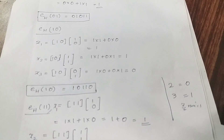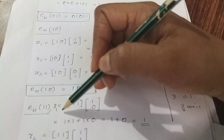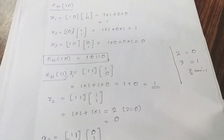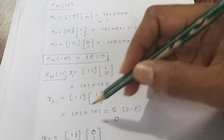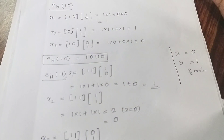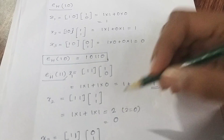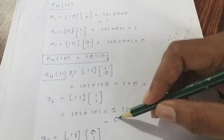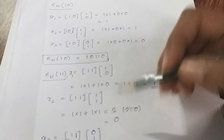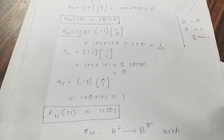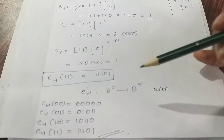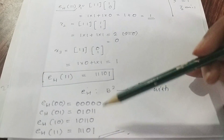The second element is e(1,1). For x2, we compute: plus 1 into 1 gives 2, then we take the binary representation — 2 divided gives remainder 0, so 2 is represented as 0 in mod 2. The answer e(1,1) equals 11101. So the encoding function e: b² → b⁵ is now complete.